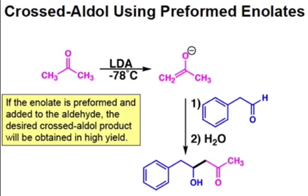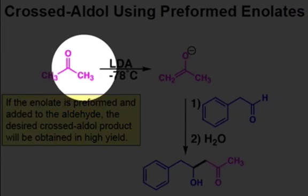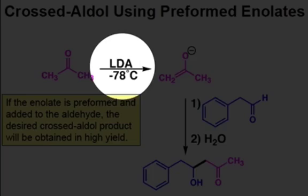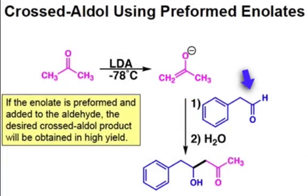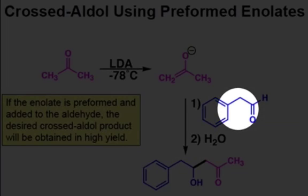Another way in which chemists have avoided the mixtures of products that result is by first preforming the enolate with LDA and then adding it to the second carbonyl component. As you can see in this reaction, we're not restricted to using only one carbonyl component that contains alpha hydrogens.